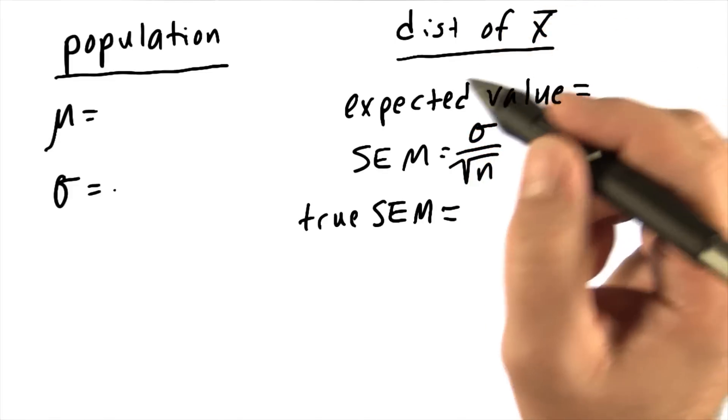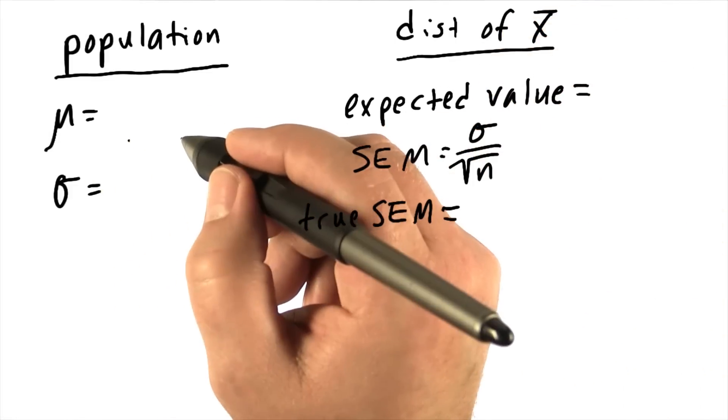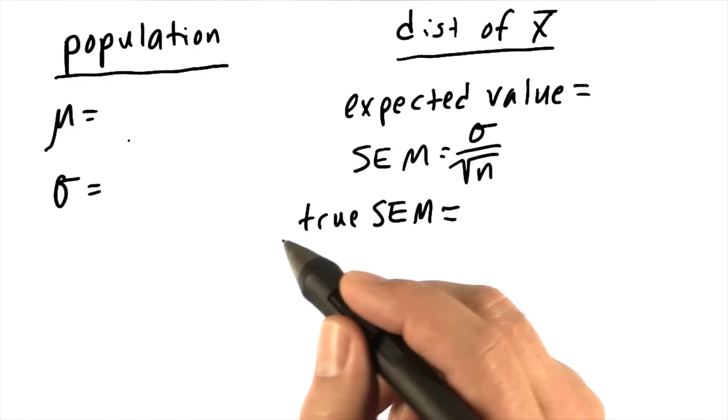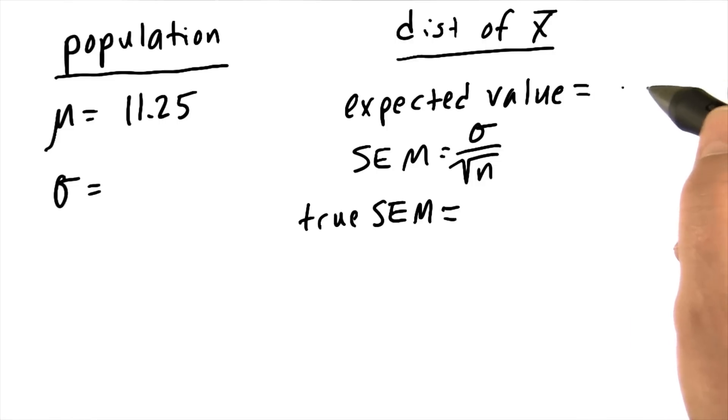Okay, let's look at the data and compare the two distributions. The population mean, in other words, the average number of blue M&Ms across all of our bags, was 11.25. The expected value, in other words, the mean of all the means we took from our 50 random samples, was 11.08.